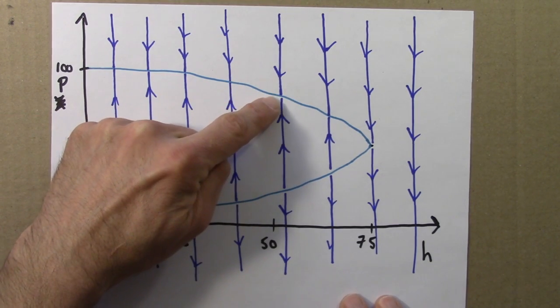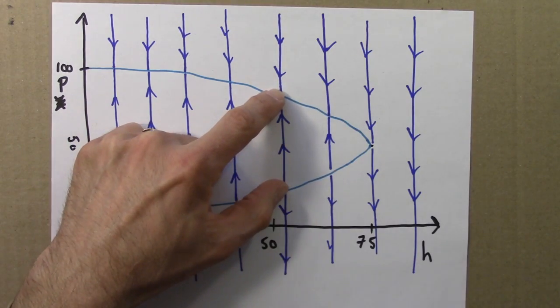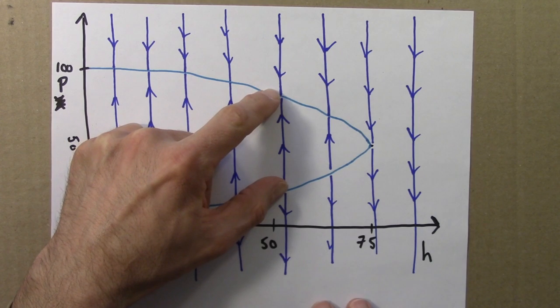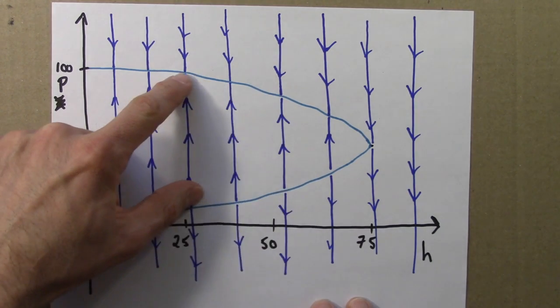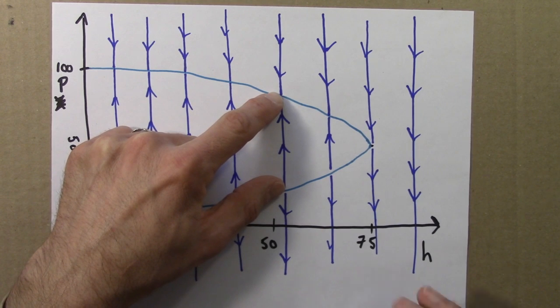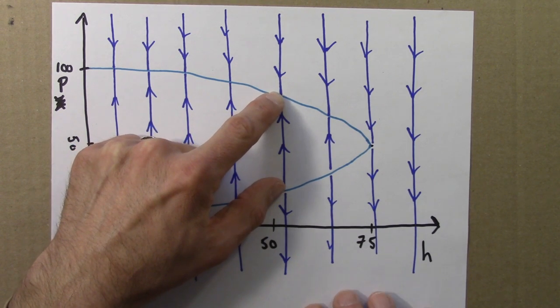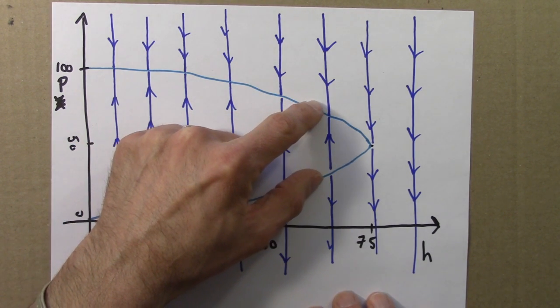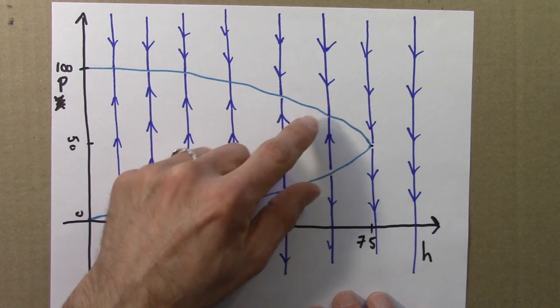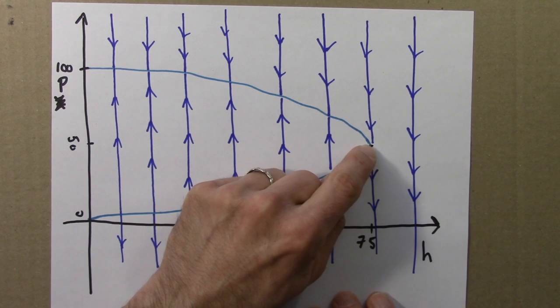We continue to increase the rate of fishing when we're here. Again, we have a stable fixed point here. Arrows are pushing towards it. And an unstable fixed point here by my thumb. So yes, the values of the fixed points have changed. But that doesn't change the overall character of the equation. There's still one stable and one unstable fixed point. And we keep increasing the value of h. We increase the amount of fishing. And here, we have a qualitative change.